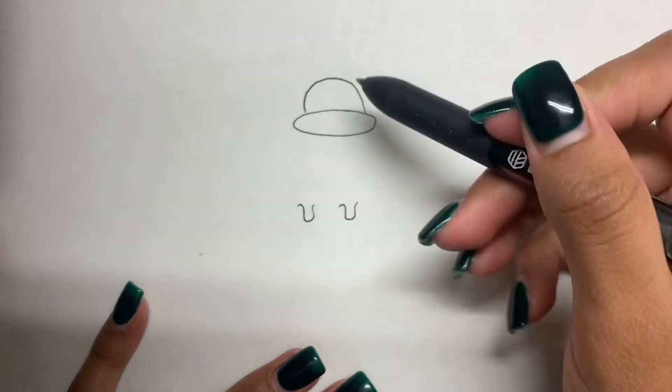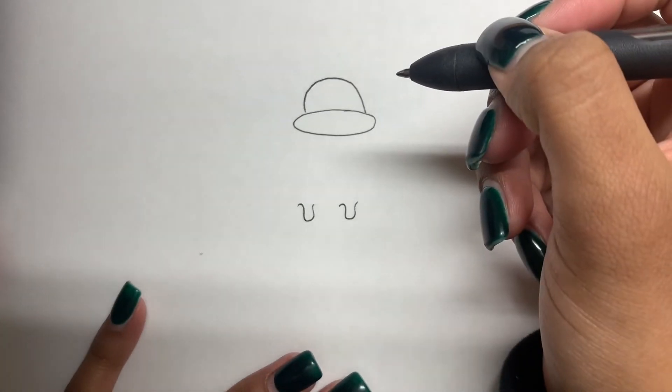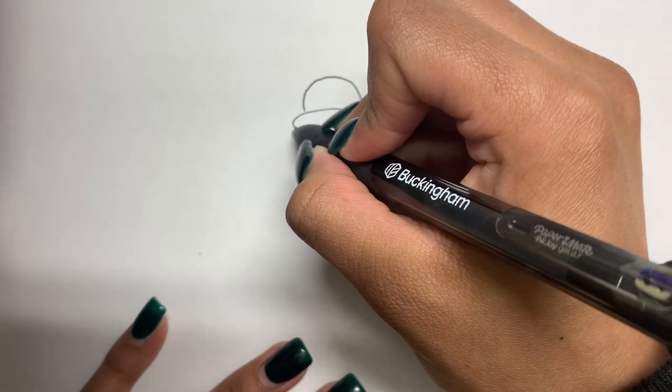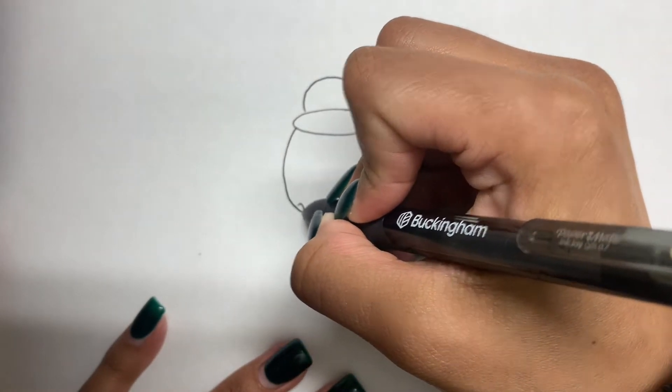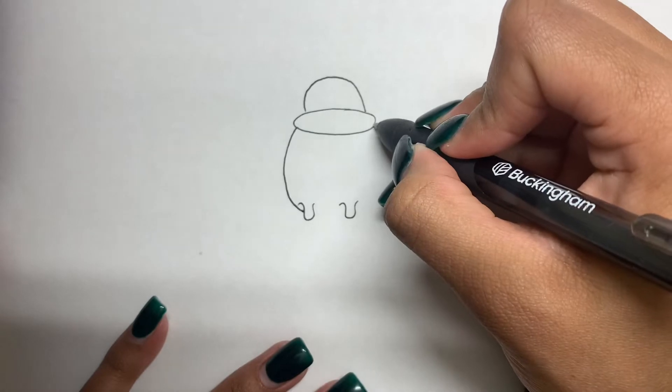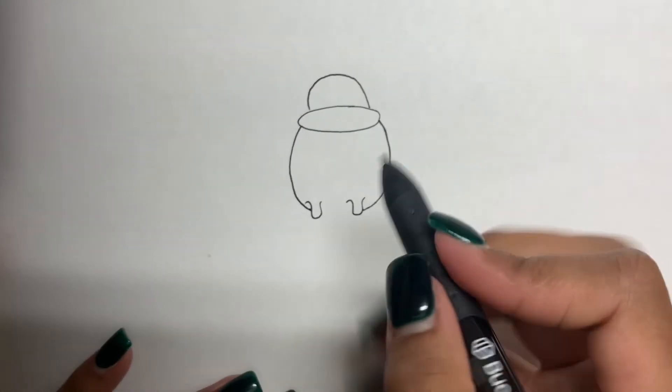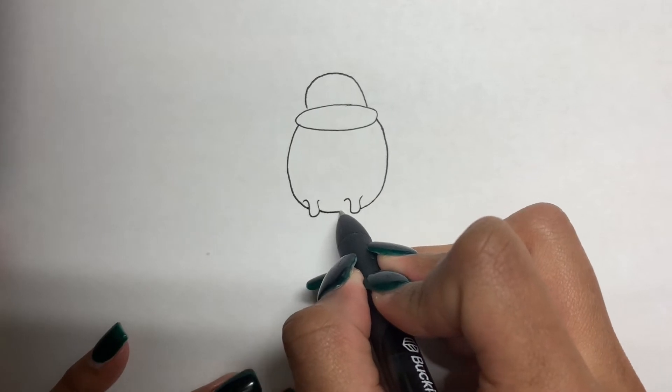Then we're going to connect these two by using three lines. So on the left, we're going to go right under the cheek, right here, and connect right to the kind of the center of that paw. Same thing over here, right kind of by that cheek, into the center of the paw. And then finally, connect the two through the center.